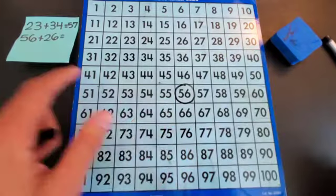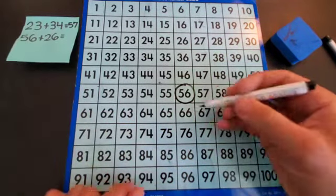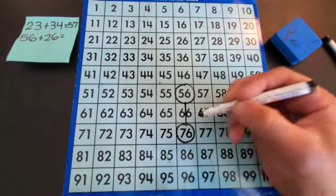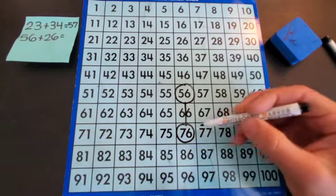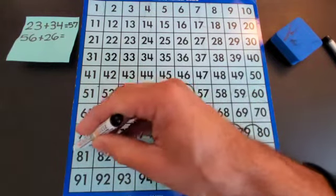And I know I have to take 2 steps of 10 and 6 steps of 1. 1, 2. That's my 2 steps of 10. And now 6 steps of 1. 1, 2, 3, 4, 5, 6.